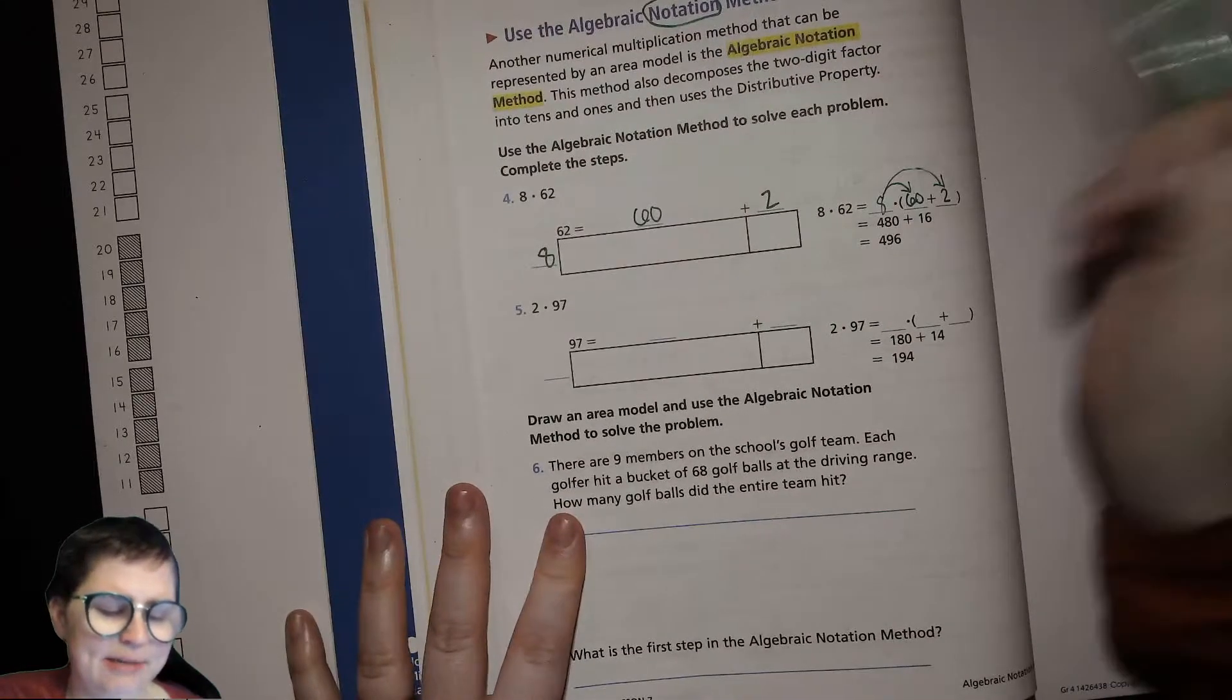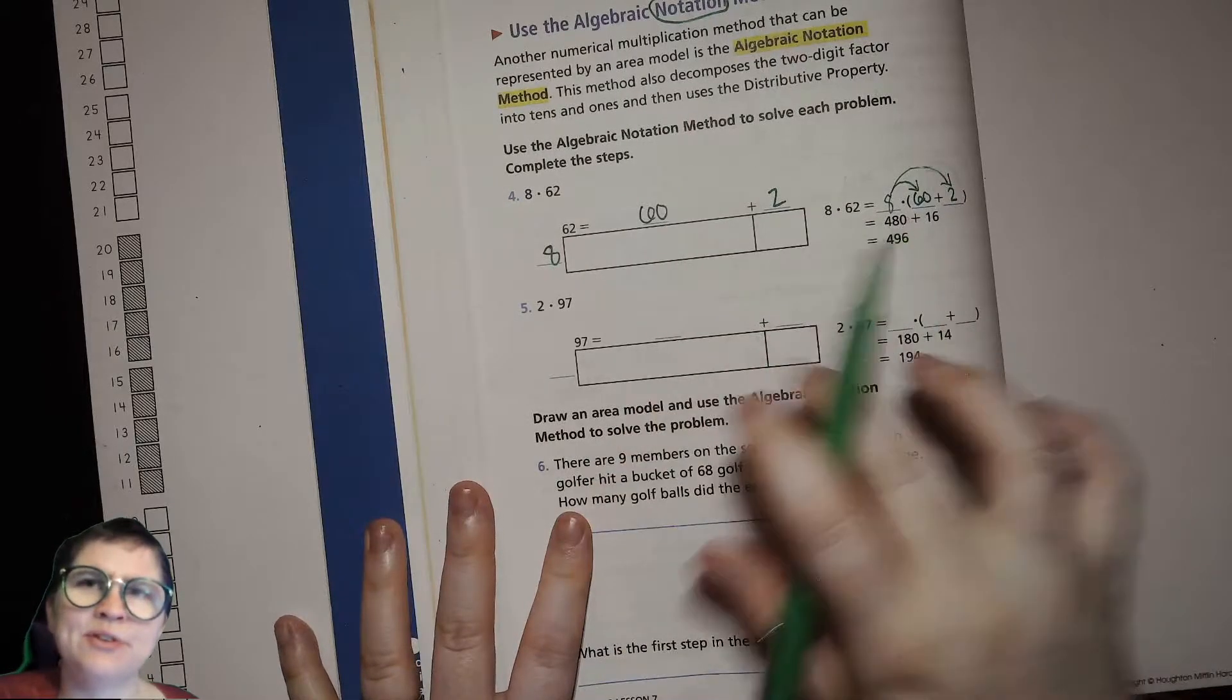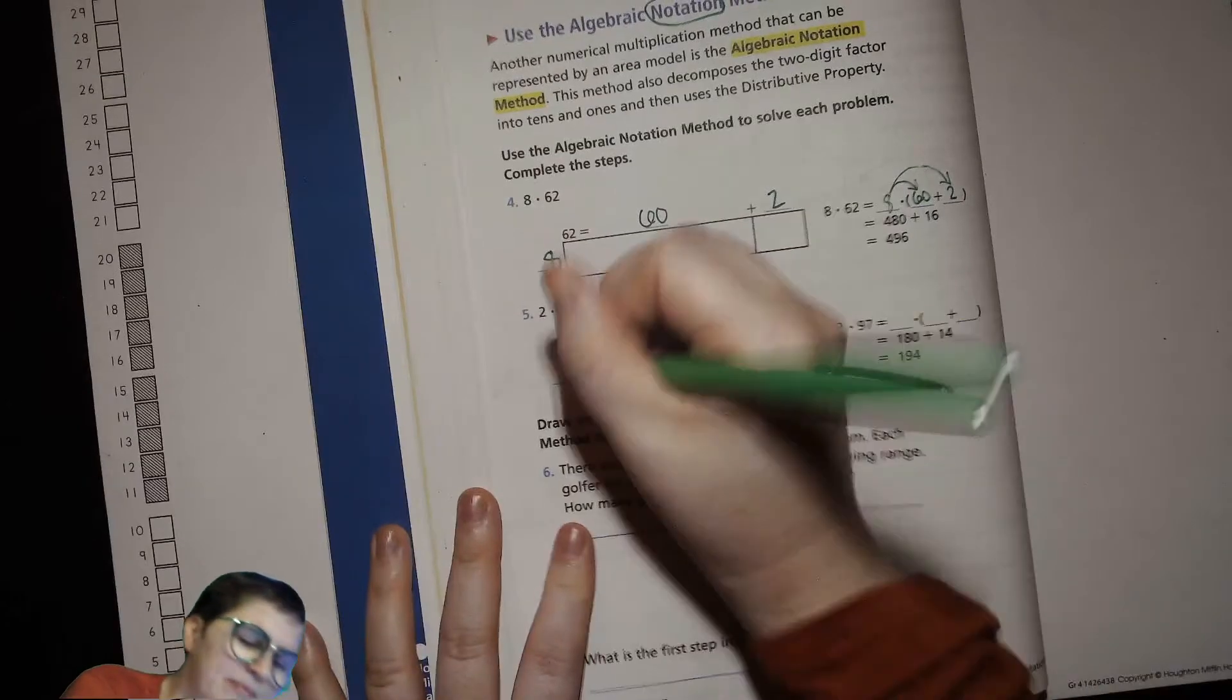And then we add those up and we get 496. Okay, all right. Now let's look at number 5. If you're feeling good about this go ahead and attempt to fill this out and then hit play.